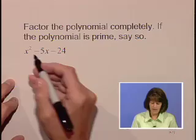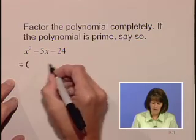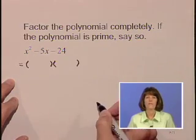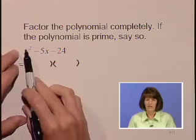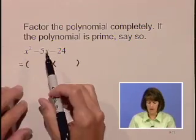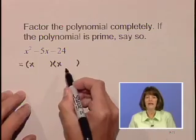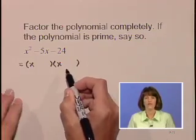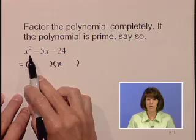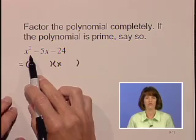If it does factor, it will factor as two binomials. Now, the leading coefficient here is one, and so we know that we should use x and x for our leading coefficients in the factorization because x times x is our only possibility for x squared.